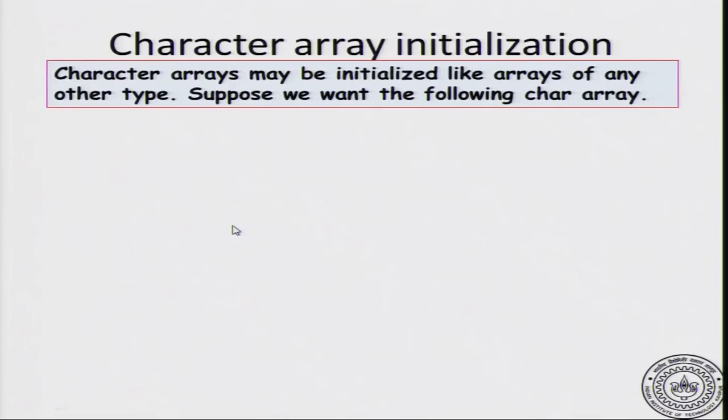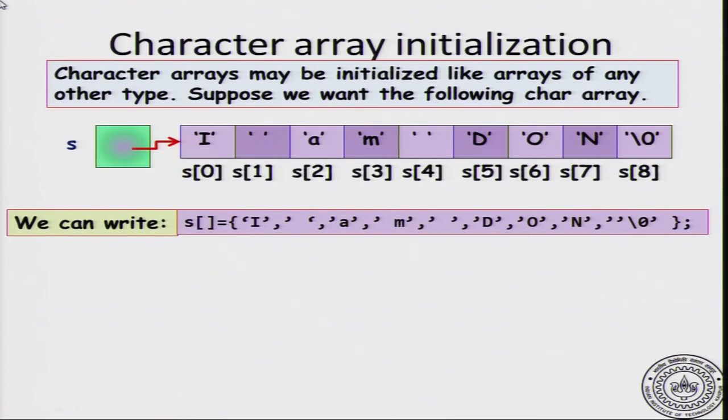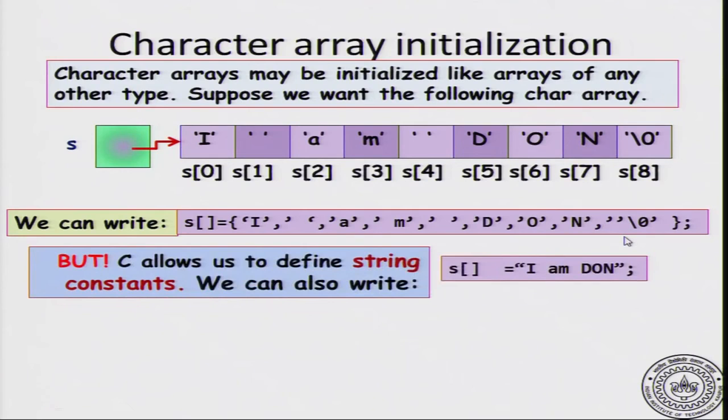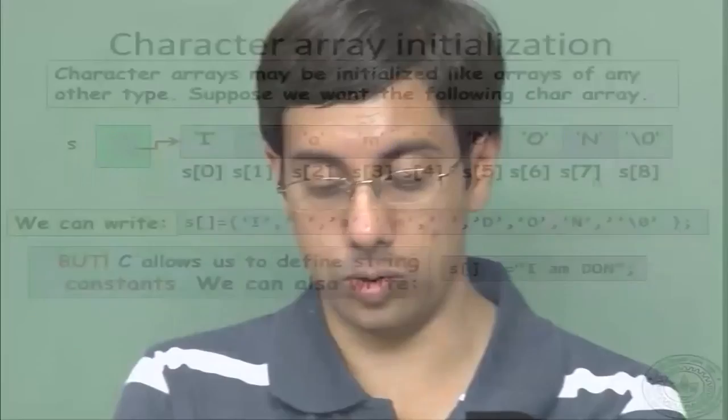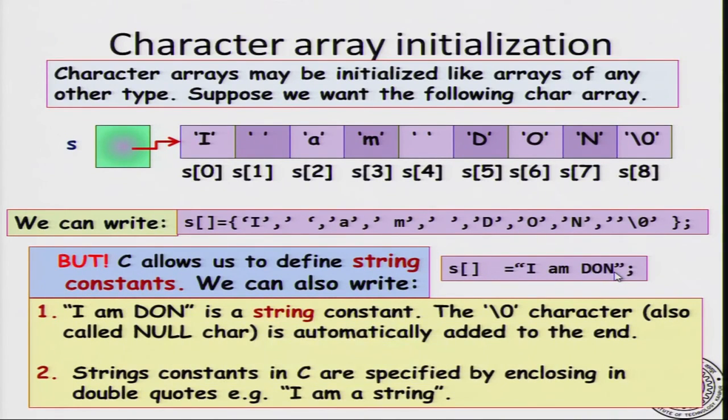Now, how do we initialize character arrays? Character arrays can be initialized like arrays of any other type. Suppose we want the following array S = {'I', ' ', 'A', ' ', 'M', etc.}. I can initialize it just like I initialize the other array. I will not specify the size of S and then give these characters {'I', 'A', 'M', 'D', 'O', 'N', 'E'}. This is another way to specify it and the last character is a null character, but C also allows you to define what are known as string constants. We can also write S = "I am done", but now within double quotes. This is known as a string constant. The null character is an implicit ending character inside a string constant. It is automatically added to the end. The string constants in C are specified by enclosing it in double quotes.